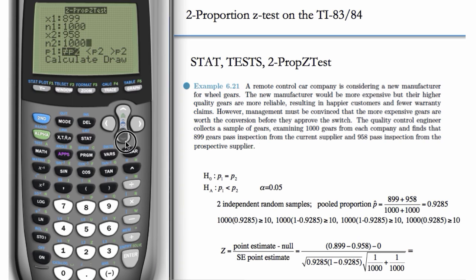And now our alternate claim is that p1 is less than p2. So, we'll choose the less than, and now we'll do calculate.